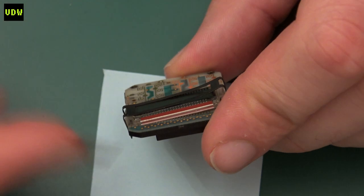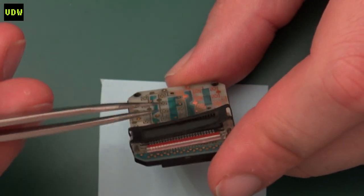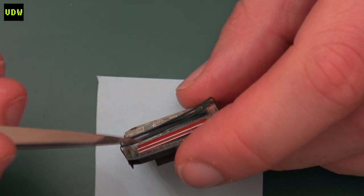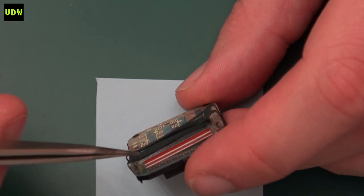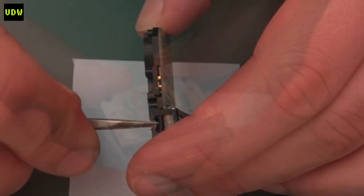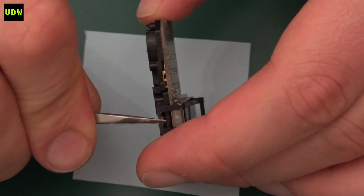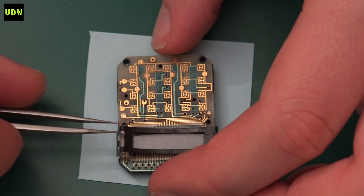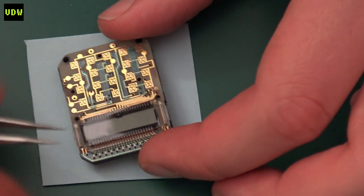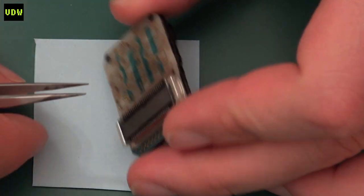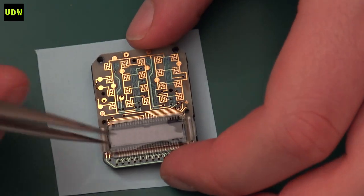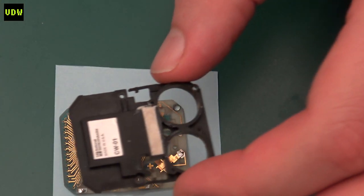There we go. You can see it's quite springy. I'm sure that its purpose was also to keep pressure on the zebra strip here to make sure that there is good contact between the LCD and the pads coming from the PCB. We must take note of where the LCD sits, and now this should be able to come off.